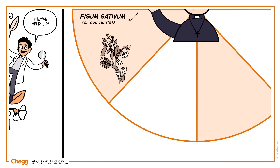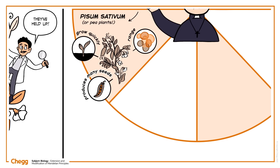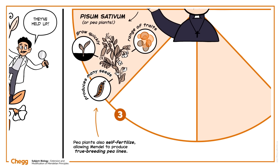Pea plants make a useful model system because they grow quickly, produce many seeds, and have a range of traits. They vary in seed color, seed shape, pod shape, flower color, stem length, and so on. Pea plants also self-fertilize, allowing Mendel to produce true-breeding pea lines. In a small plot on the grounds of his abbey, he carefully sorted the progeny derived from parent plants based on these characteristics, keeping track of the number of plants produced with each trait.